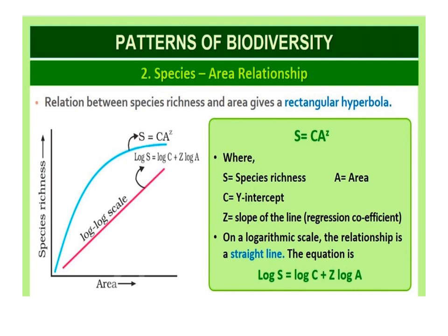On the logarithmic scale, the relationship is a straight line described by the equation: log S = log C + Z log A, where S is species richness, A is area, C is the y-intercept, and Z is the slope of the line, also called the regression coefficient. The value of Z lies in the range of 0.1 to 0.2 regardless of the taxonomic group or the region. However, the species-area relationship among very large areas like entire continents has a much steeper slope, with Z values in the range of 0.6 to 1.2.